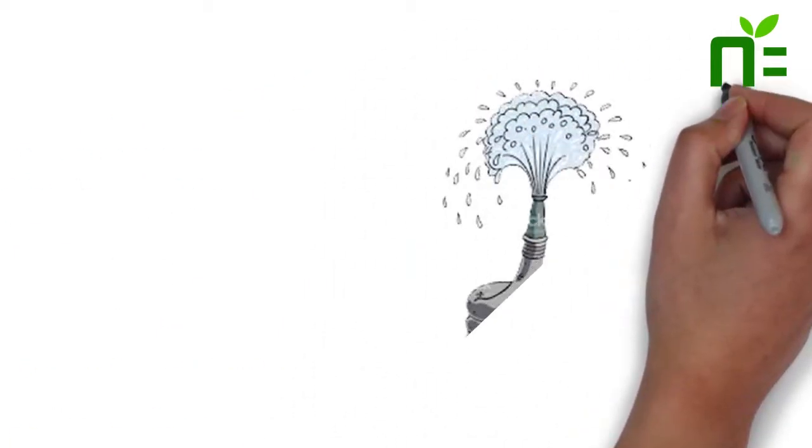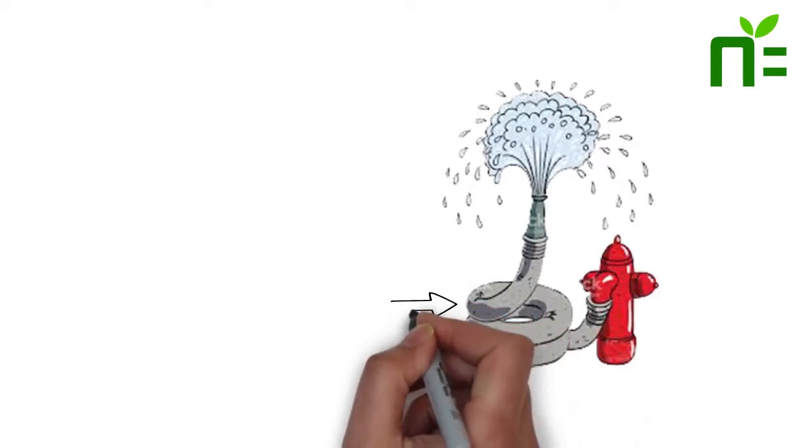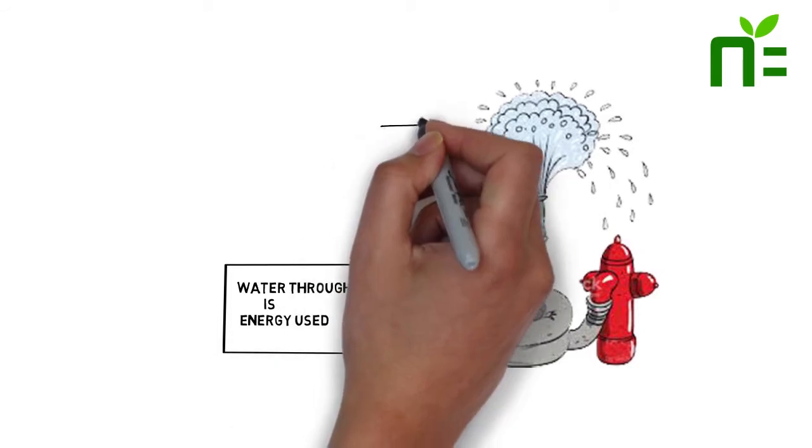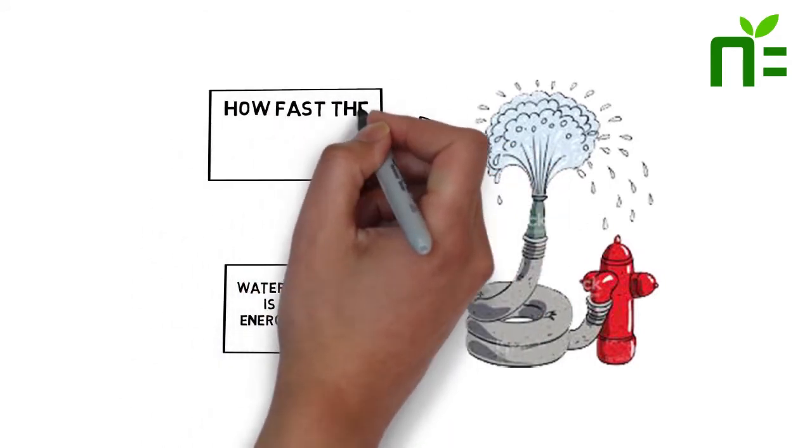If you think of it from an analogy of a pipe, the total amount of water going through the pipe is the energy used. How fast the water flows is the demand.